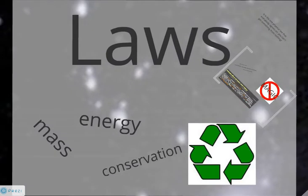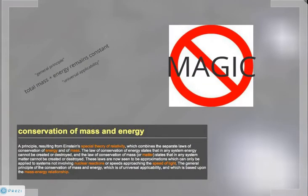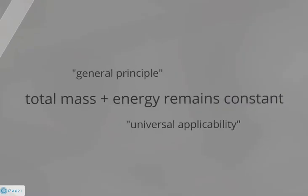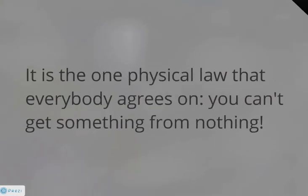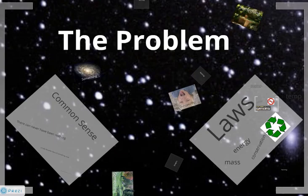That's just common sense, but we can look at it from the scientific laws. The main one to look at is this law of conservation of mass and energy. What it basically says is that the total mass and energy in a system remains constant. You just can't pop something into existence magically. It's a general principle with universal applicability. It really is the one physical law that everybody agrees on. You can't get something from nothing.